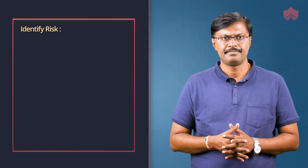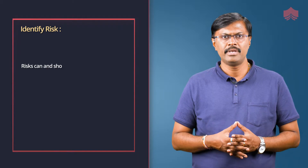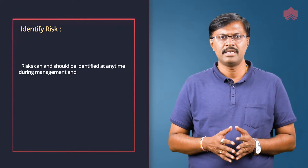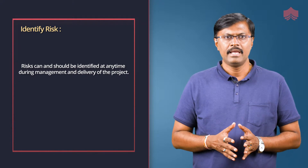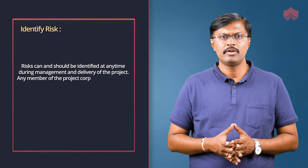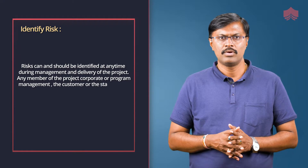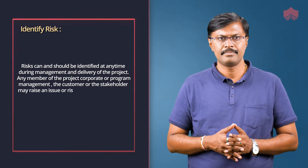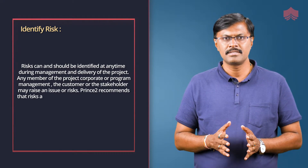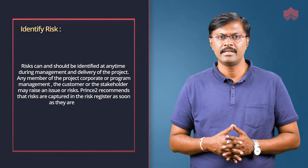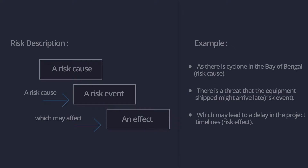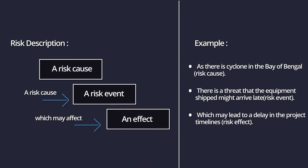Risk can and should be identified at any time during the management and delivery of the project. Any member of the project, corporate or program management, the customer or a stakeholder may raise an issue or risk. PRINCE2 recommends that risks are captured in the risk register as soon as they are identified. Risk description is a useful way of expressing risk by considering the following aspects: risk cause, risk event and risk effect.